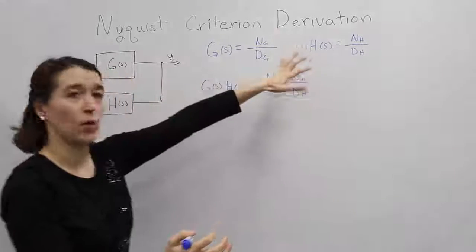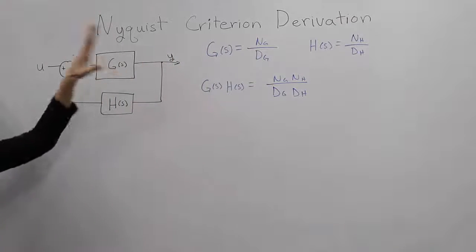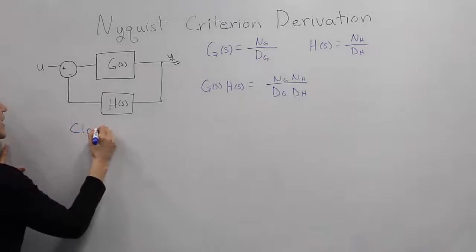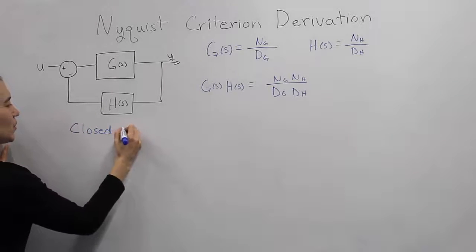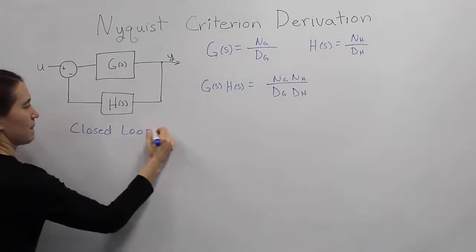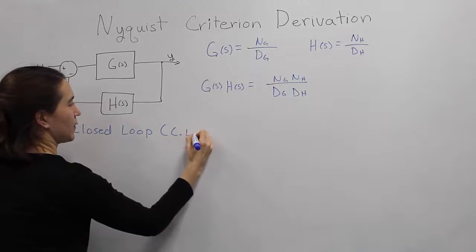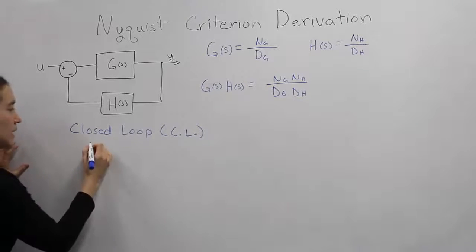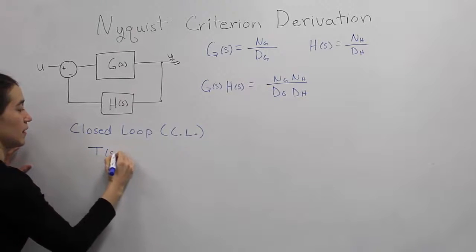Okay, so these are some open-loop basic notations. What about closed-loop? So let's go to closed-loop. CL, we might abbreviate it like that. CL closed-loop is T, right? So T of s here.